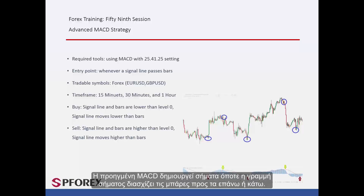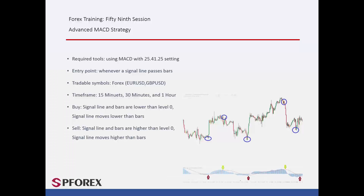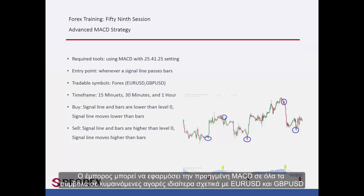Advanced MACD generates signals whenever the signal line crosses the bars towards the top or bottom. A trader can apply Advanced MACD on all symbols with range markets, especially on EUR/USD and GBP/USD.